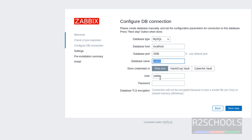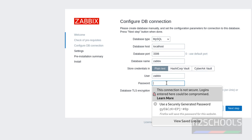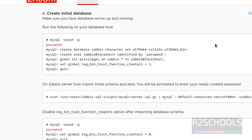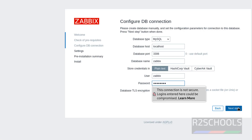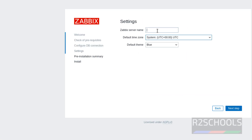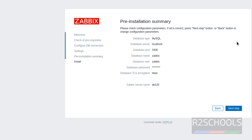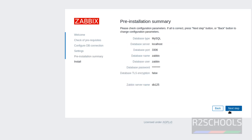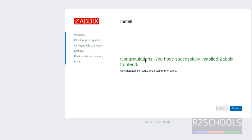For hostname, you can give localhost or db125 — both are fine because MariaDB is installed on this local host. Port number for MariaDB is also 3306. Database name is 'zabbix'. We created the user 'zabbix' as well. Provide the password for this Zabbix user — that is 'password'. Click next step. Then provide the Zabbix server name — localhost — since Zabbix is installed on this machine. Select the theme, then click next step. This is the pre-installation summary. If you are okay with all settings, click next step, otherwise go back to modify. Click next step. Congratulations — you have successfully installed Zabbix frontend. Click on finish.